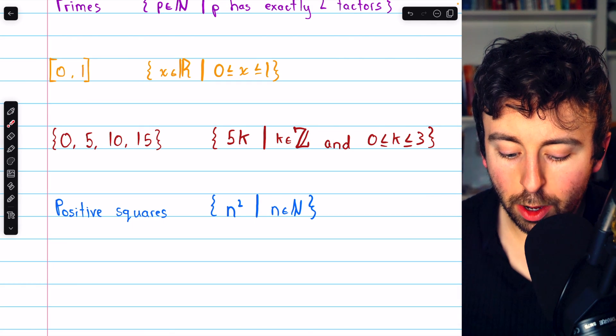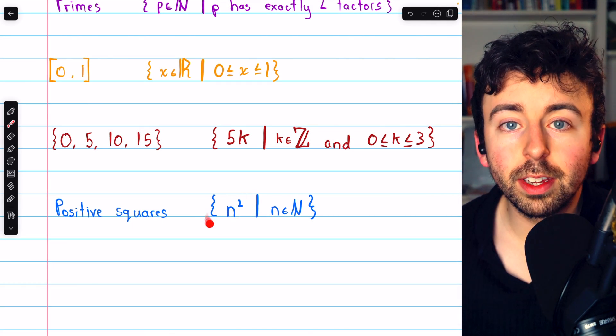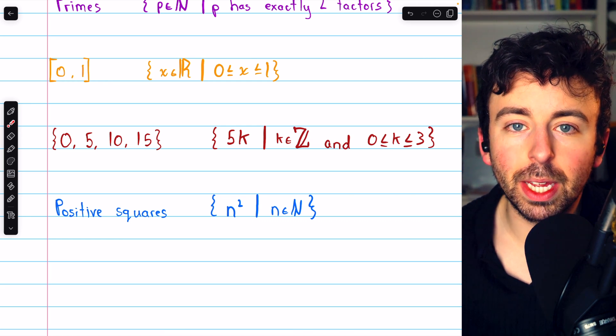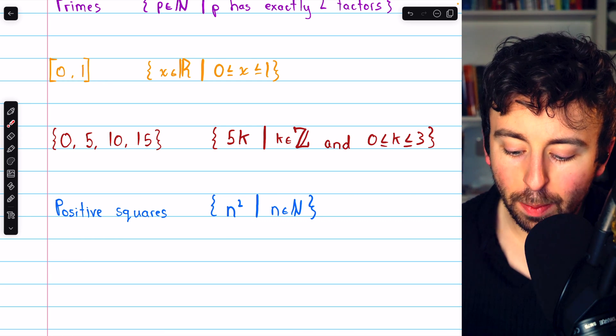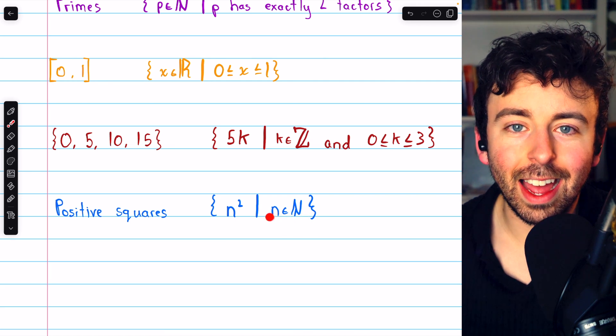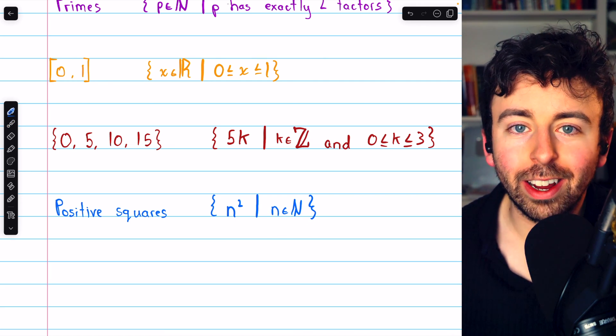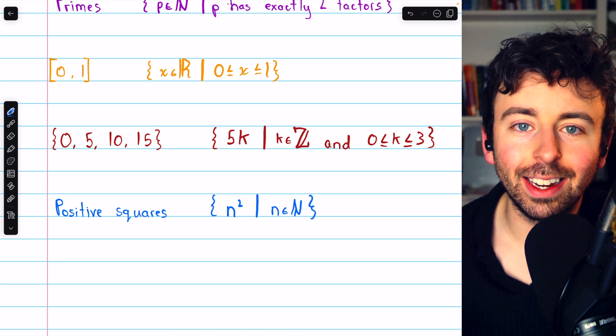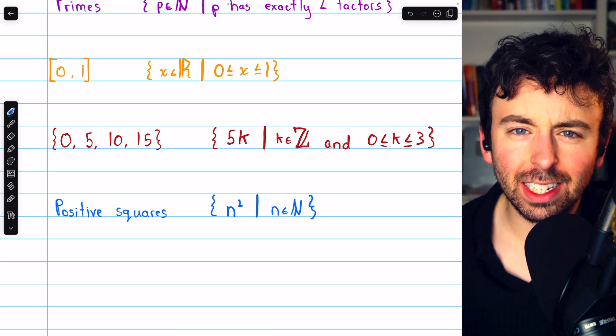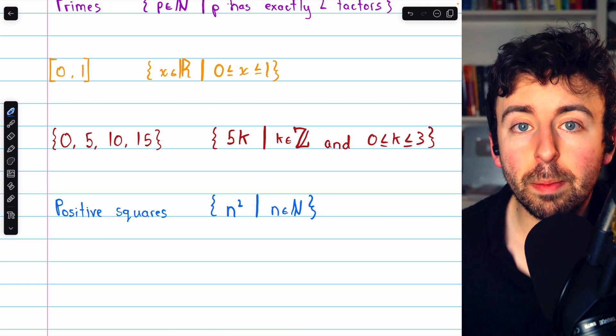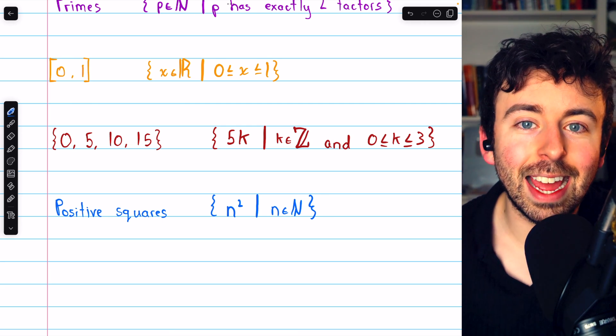For example, when we try to write the set of positive squares, if I don't give n squared as the general form of my element on the left side, then I would have to capture that in some way on the right side. I could do that by just writing that n is a square, or I could write that the square root of n is an integer, but it's more convenient to just write n squared on the left. So that's a little bit about set builder notation and how to read it and how to use it.